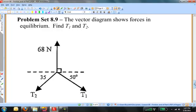The vector diagram shows forces in equilibrium. Find T1 and T2. In this case, T1 and T2 are forces. They're acting on an object. There's a third force, 68 newtons, which is shown as well.